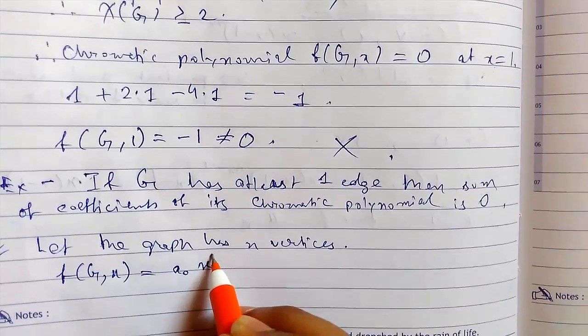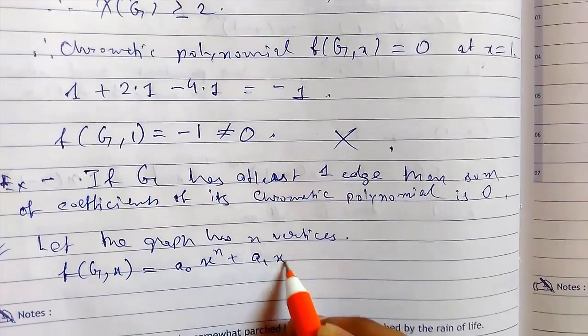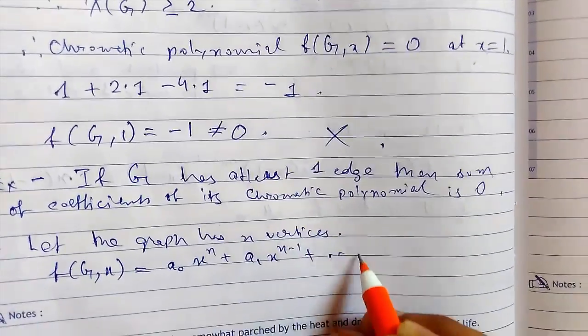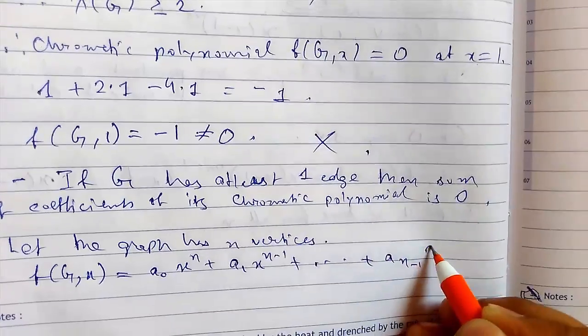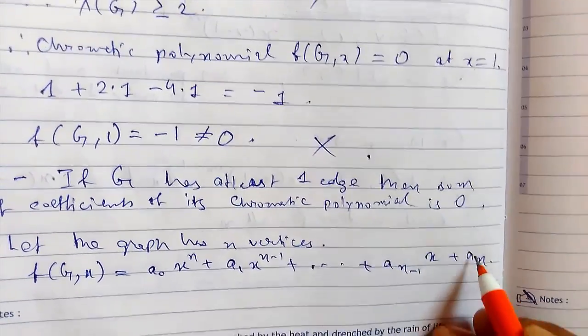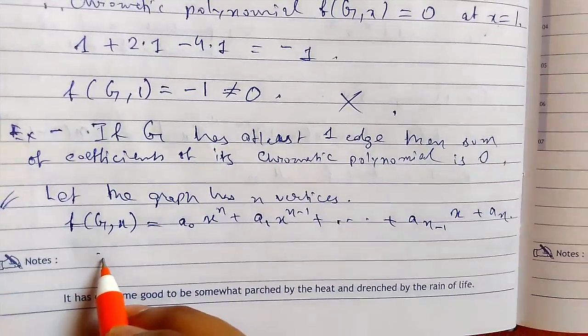a0 x to the power n plus a1 x to the power n minus 1 and so on up to a n minus 1 x plus a n. So this will be the last two terms. So since graph has at least one edge...